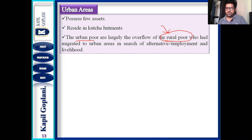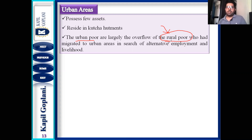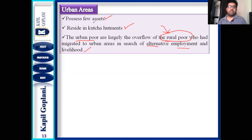During the lockdown period, the major working population which had come from rural areas to urban areas in search of jobs is going back to their rural areas because there are no job opportunities in the city. So urban poor features: few assets, kaccha hutments, and largely migrants from rural areas in search of alternative employment and livelihood.